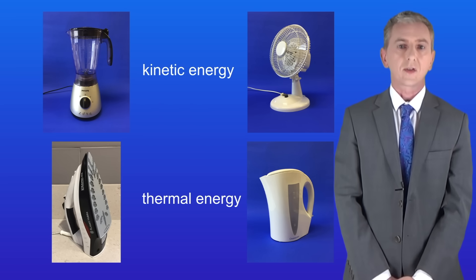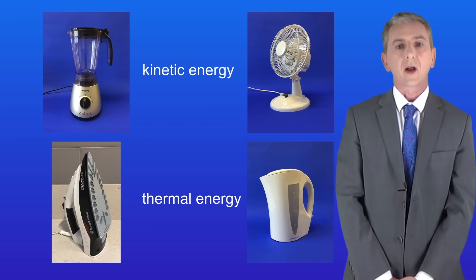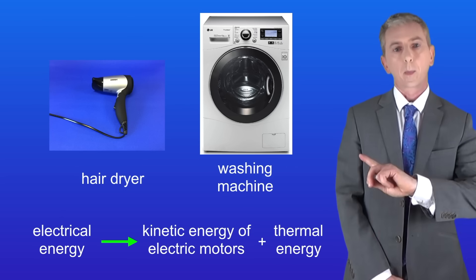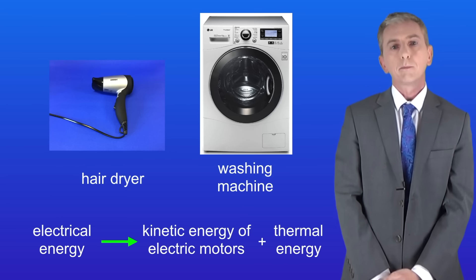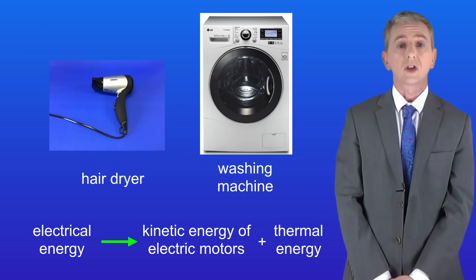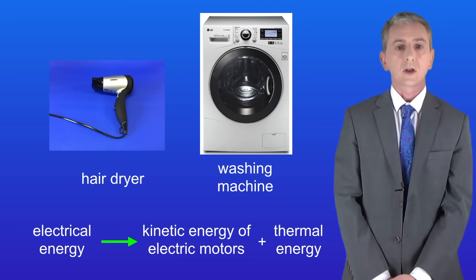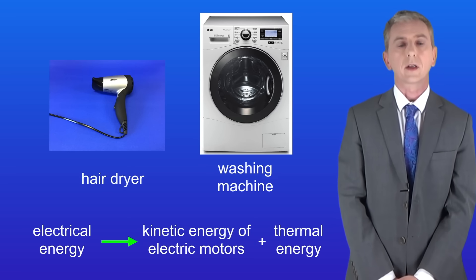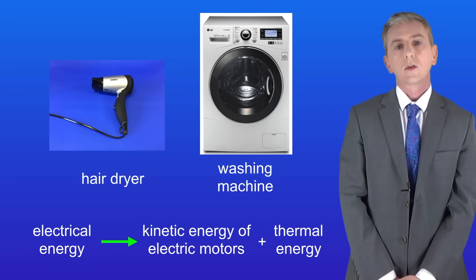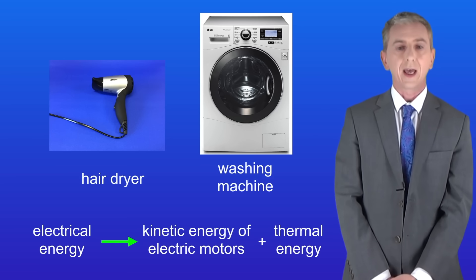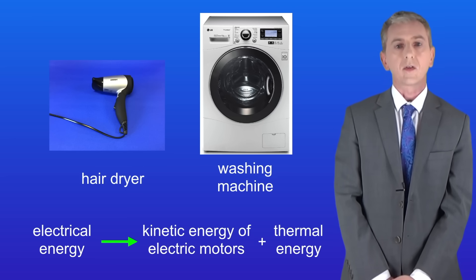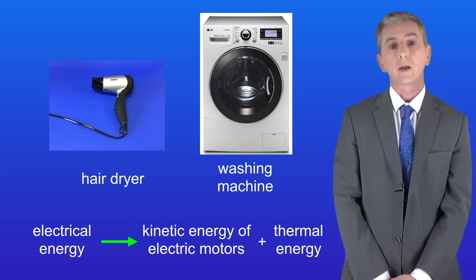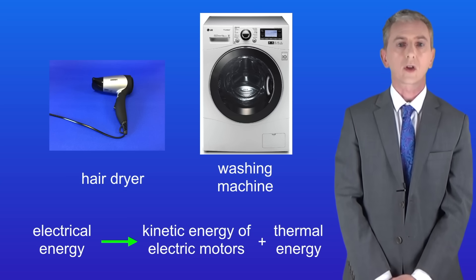Some appliances are designed to do both, and I'm showing you two examples here: a hairdryer and a washing machine. Both of these appliances use electrical energy and transfer it to both kinetic energy and thermal energy. A motor moves air through the hairdryer and a heating element heats the air. In the case of the washing machine, a heating element heats the water and a motor turns the drum to wash the clothes.